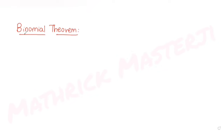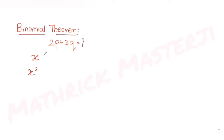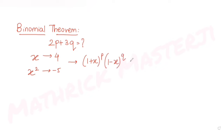The question asks us to find the value of 2p plus 3q, where the coefficients of x and x squared are 4 and minus 5 respectively in the expansion of (1 plus x) raised to p, multiplied by (1 minus x) raised to q.